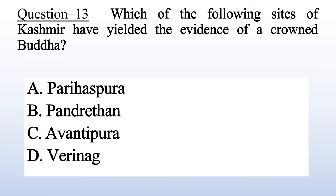Question 17: Which of the following sites of Kashmir has yielded the evidence of a crowned Buddha? A. Parihaspura, B. Pandrethan, C. Avantipura, D. Varinag. Answer is A: Parihaspura.